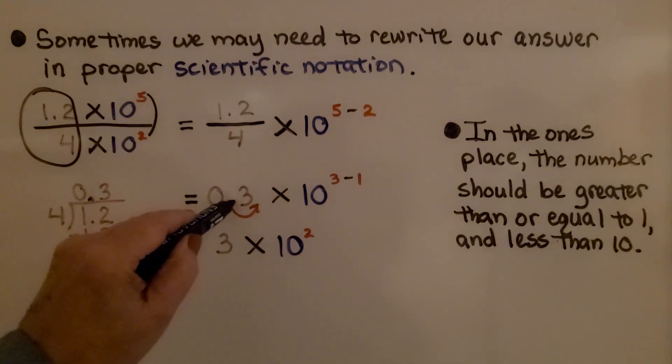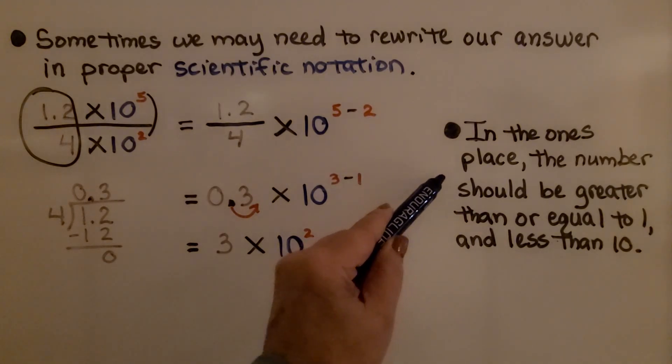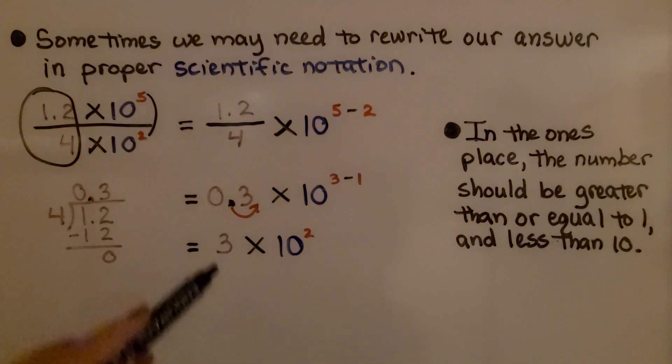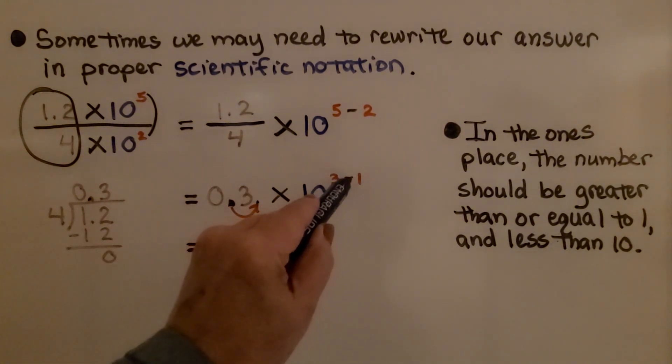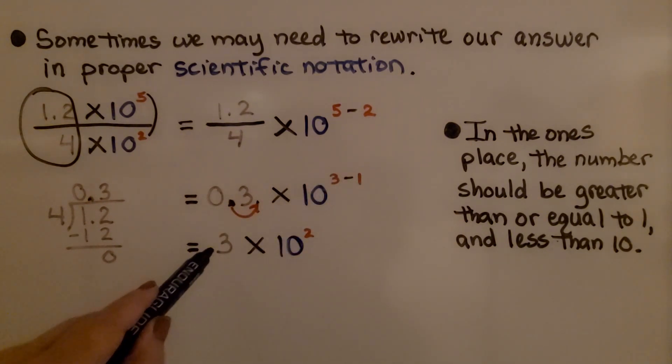But we can't have 3 tenths in scientific notation. It needs to be written properly, where in the ones place, the number should be greater than or equal to 1 and less than 10. We need to move this decimal point back to here, which means we need to subtract 1 from this power of 10. We're going to have 3 times 10 raised to the 2nd power.